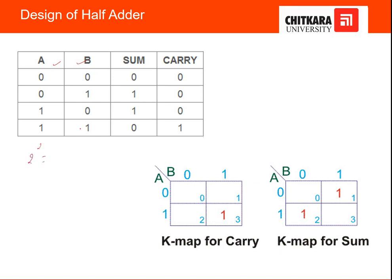The four input combinations are: 0+0 gives sum=0 and carry=0; 0+1 gives sum=1 and carry=0; 1+0 gives sum=1 and carry=0; and 1+1 gives sum=0 and carry=1. This completes the truth table for the half adder circuit.